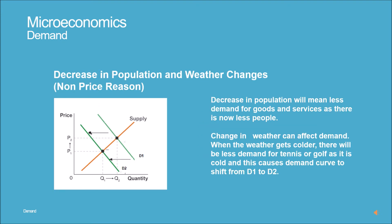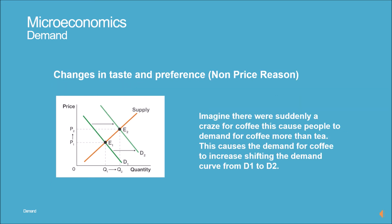Decrease in population and weather changes — non-price reasons: a decrease in population will mean less demand for goods and services, as there are now fewer people. A change in weather can also affect demand. When the weather gets colder, there will be less demand for tennis or golf, and this causes the demand curve to shift from D1 to D2.